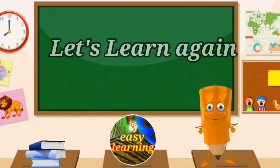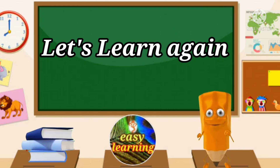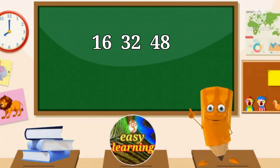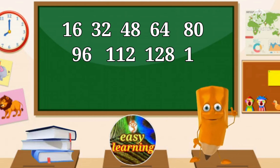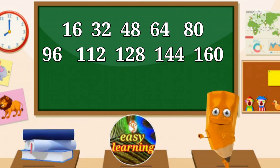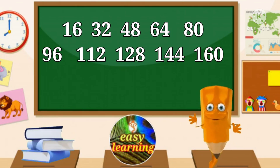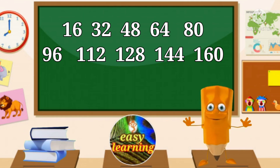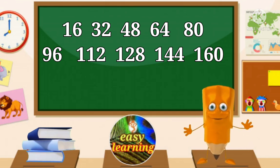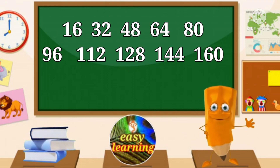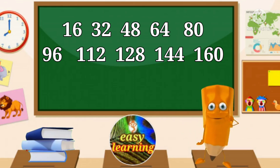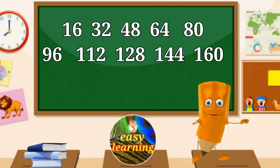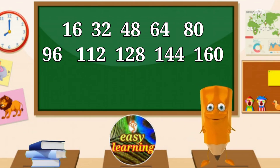Okay children, let's learn once again. 16 1s are 16, 16 2s are 32, 16 3s are 48, 16 4s are 64, 16 5s are 80, 16 6s are 96, 16 7s are 112, 16 8s are 128.